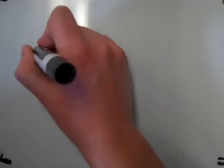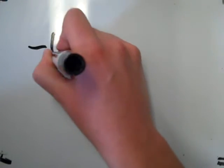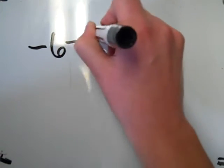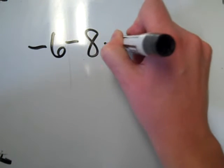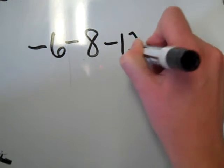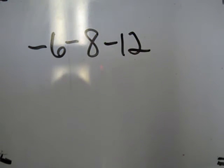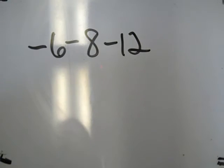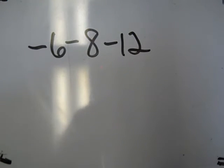All right, just a couple more. We're going to look at one that's a little different. We have negative 6 minus 8 minus 12. Now this is different because there are three numbers, but that's okay — we just change both subtraction problems to addition.